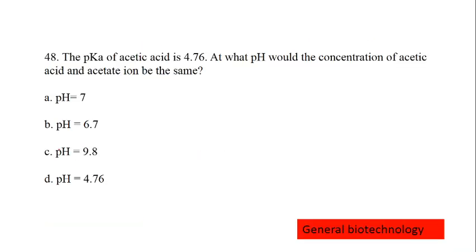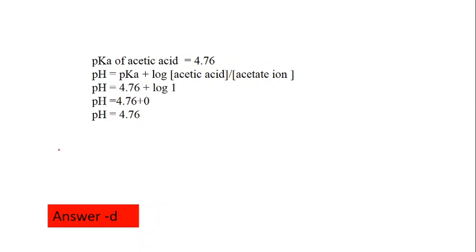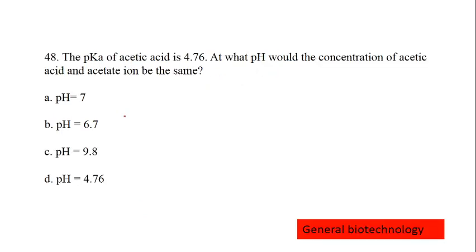Next question, the pKa value of acetic acid is 4.76. At which pH would the concentration of acetic acid and acetate ion be the same. The formula is pH equal to pKa plus log acetic acid by acetate ion. The pKa value is 4.76. As the concentration is same for the acetic acid and acetate ion, the value is 1. Log 1 equals 0, so the pH is 4.76. Correct option is option number D.